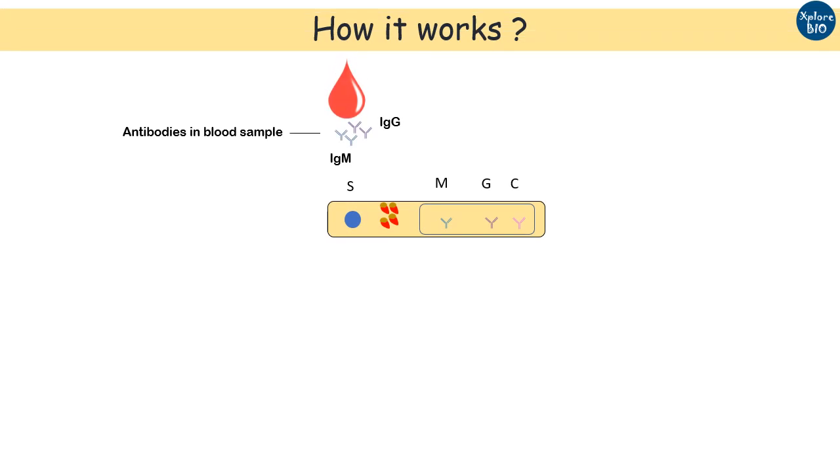The blood or the serum sample is loaded in the sample well of the chip and diluent is added to help the lateral movement. When the sample reaches the conjugation pad,